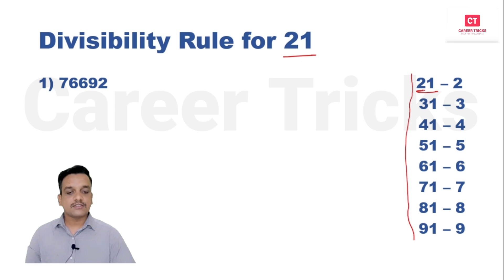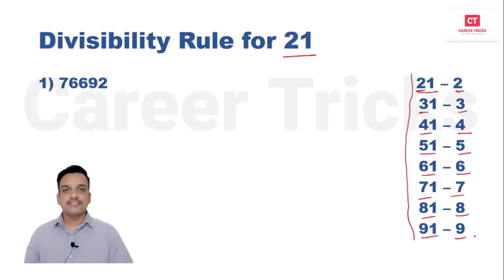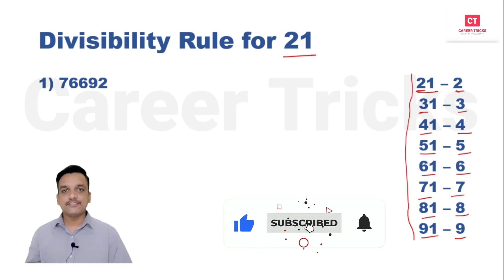Whatever we did for 29, 39, 49 — here also we have a similar set of tricks. Whichever number we take: for 21 the tens digit is 2, for 31 it's 3, for 41 it's 4, for 51 it's 5, for 61 it's 6, for 71 it's 7, for 81 it's 8, for 91 it's 9. There is a simple trick — I will let you know how to check divisibility in the easiest way.